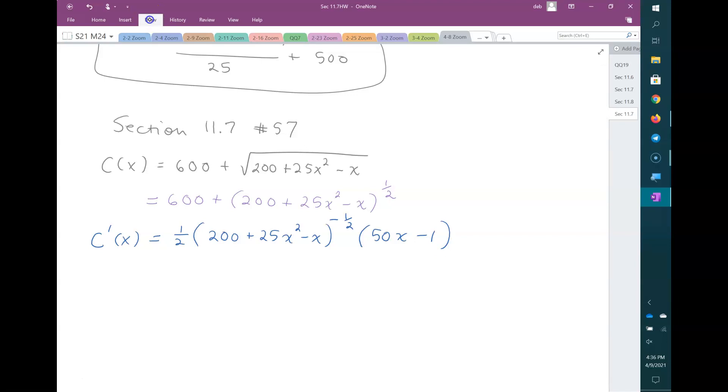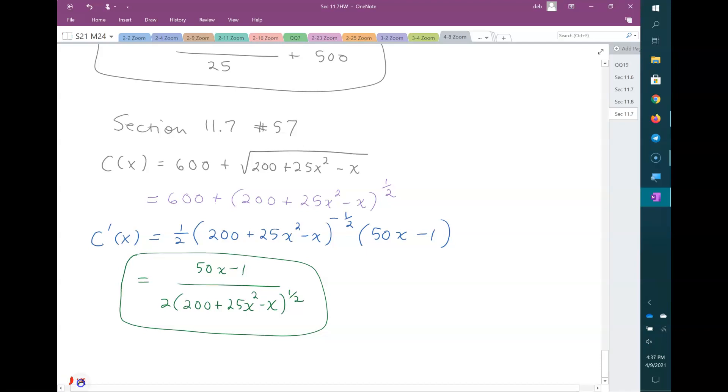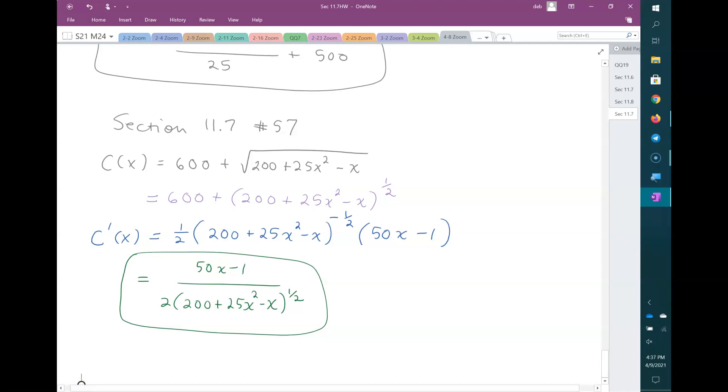So then we write this with no negative exponents as 50x minus 1 over 2 times 200 plus 25x squared minus x to the power of 1 half, or you can put that in a square root if you like. So that's the answer.